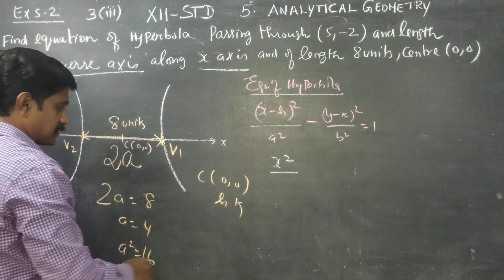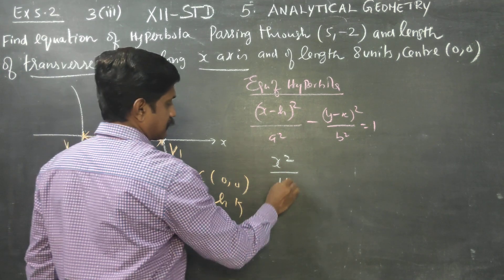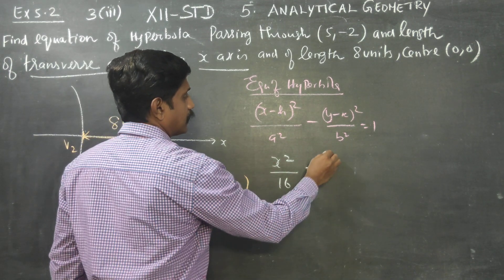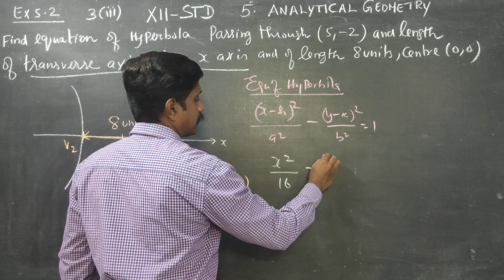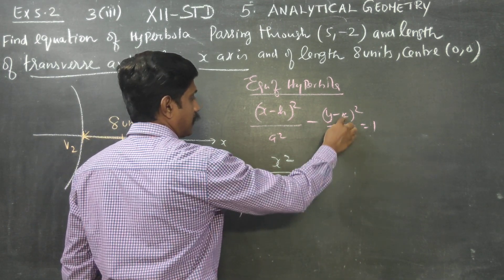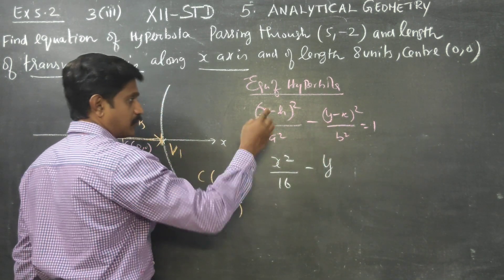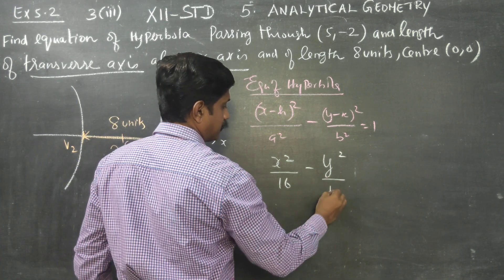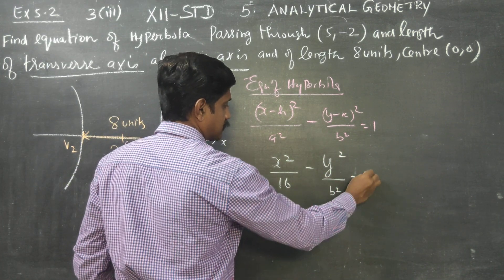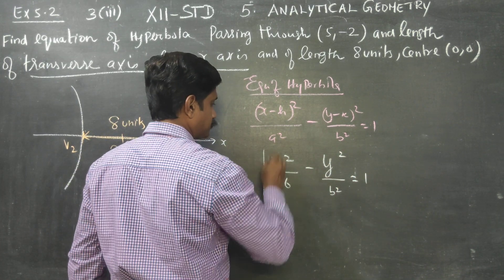A squared equals 16. With k equal to 0, the equation becomes x²/16 minus y²/b² equals 1.